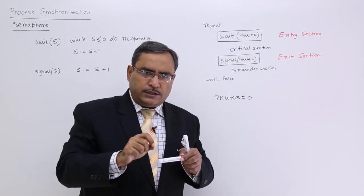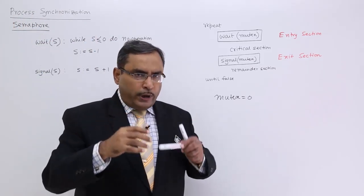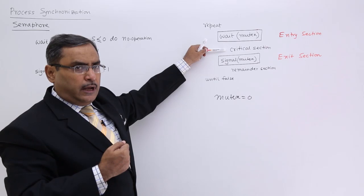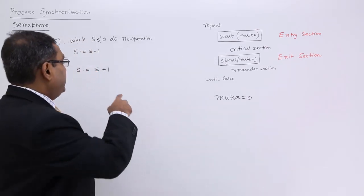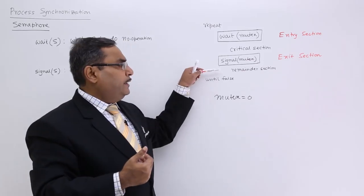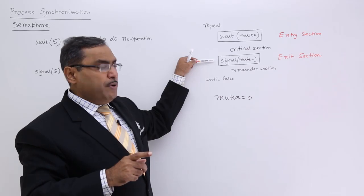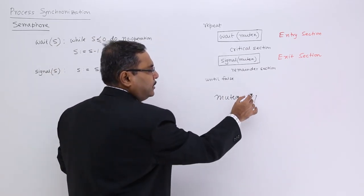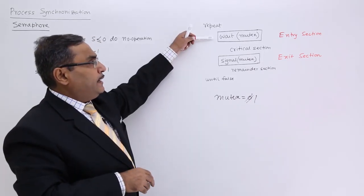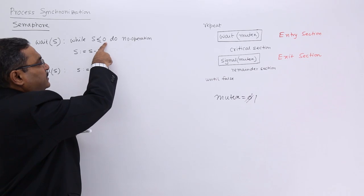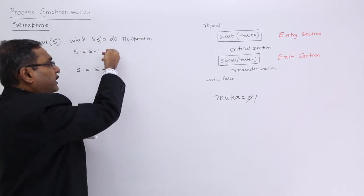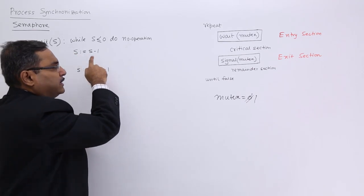Let us suppose the critical section was occupied by another process P2. When P2 completes its execution in the critical section and comes out, it will execute signal(mutex), incrementing the mutex value by 1. So when P2 leaves the critical section and enters the remainder section, mutex becomes 1. As a result, the next process P1, which was waiting at mutex = 0, now sees mutex = 1, so the condition becomes false, it exits the while loop, and mutex = mutex − 1 gets executed.